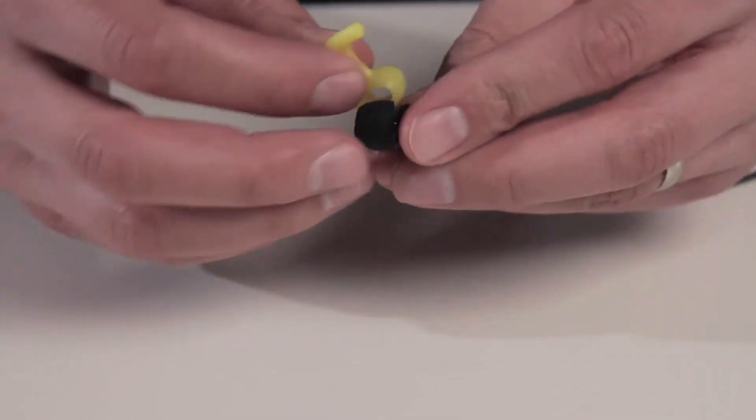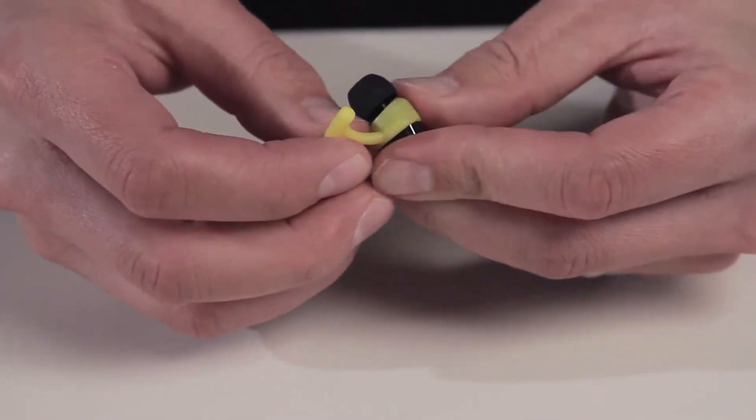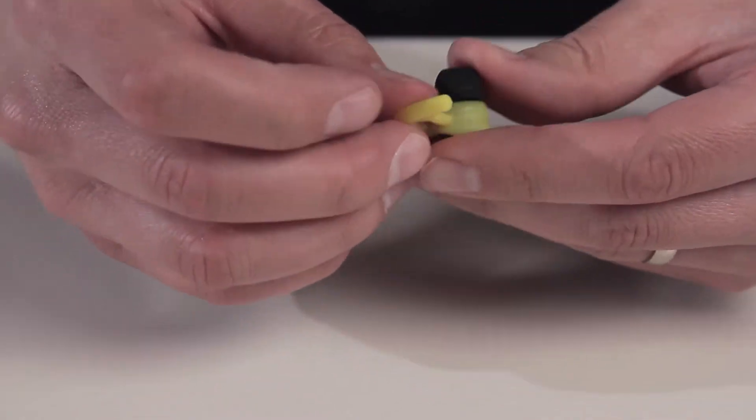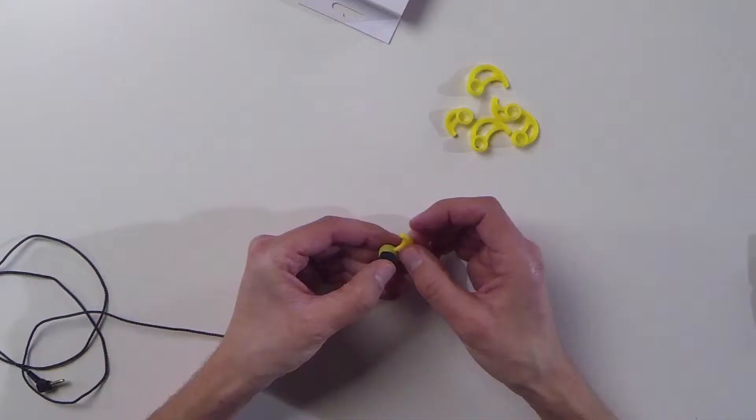Hold the BudLock so the wing's curve is on the right side. Point the earbud up and stretch the round part of the BudLock over the body of the earbud.